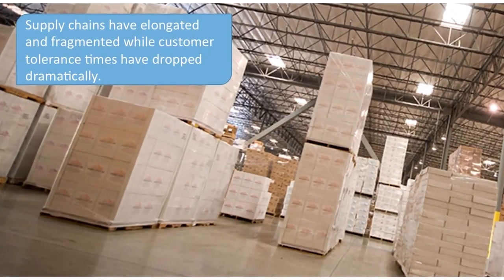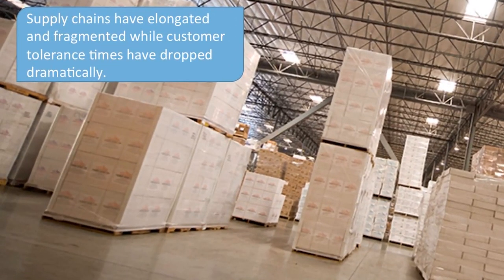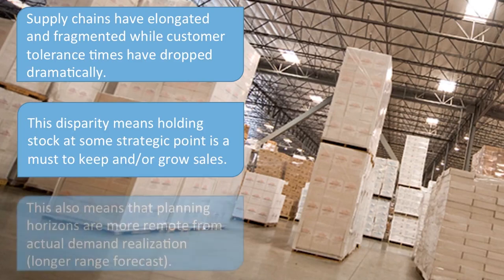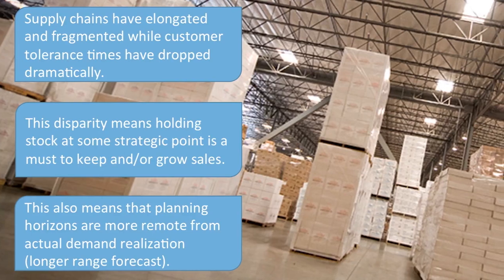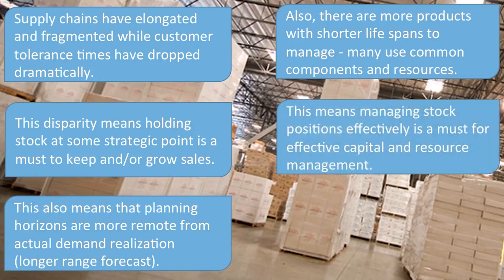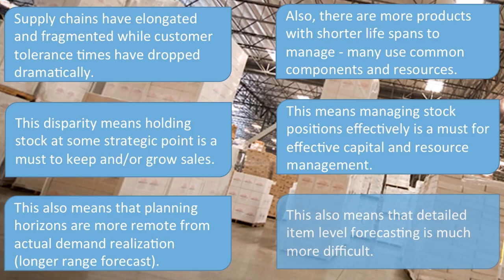Supply chains have elongated and fragmented from global sourcing and distribution efforts, while customer tolerance times have reduced dramatically. This widening gap in time means that stock at some point must be kept in order to service the market. It also means that the planning horizon is farther from actual demand, requiring us to forecast farther out. Additional stress is provided by the fact that we have more products with shorter lifespans. All of this means that effectively managing key stock positions is a necessity for properly servicing the market, as well as effective capital and resource management. It also makes detailed item-level forecasting much more difficult.